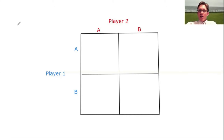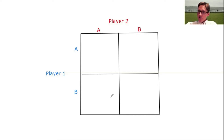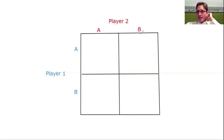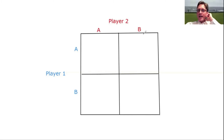Player two's choice determines which column of this payoff matrix they end up in. Player one, based on their choice, determines which row we end up in. So if player two chooses strategy B, indicating the second column, and player one chooses strategy A, indicating the first row, then we end up in this upper right box here.